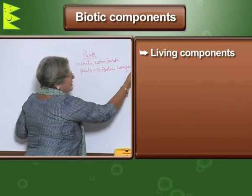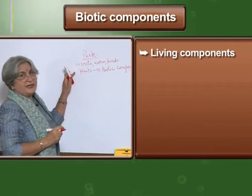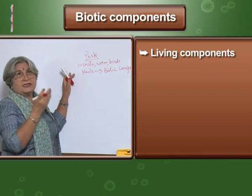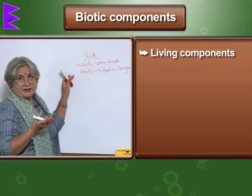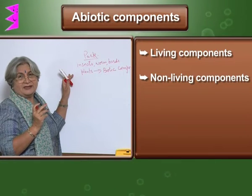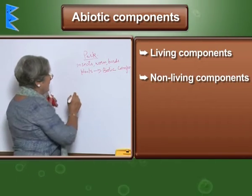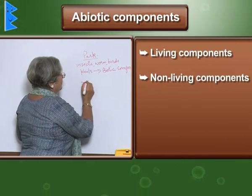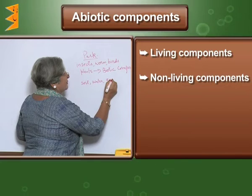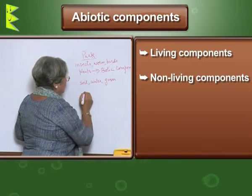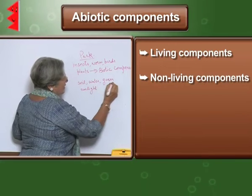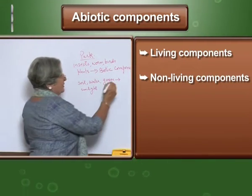But can these living beings survive without soil, water, or sunlight? They cannot. So in addition to biotic components, there are certain non-living things like soil, water, gases, sunlight, and so on — and these are called abiotic components.